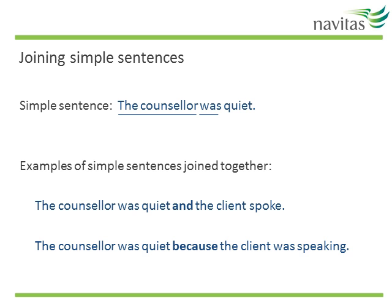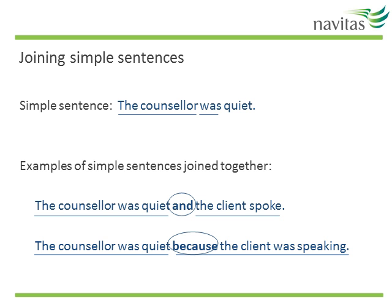Take a look at the next couple of examples of simple sentences joined together. Can you identify the two simple sentences in each example? In the first example we have 'the counsellor was quiet' joined with 'the client spoke', linked together with AND. The benefit of these sentences is that we can see how the different ideas relate to each other, which is necessary for academic writing. Of course, the grammar and punctuation is a little more tricky, and sometimes if the sentences are too complex it can confuse the reader.